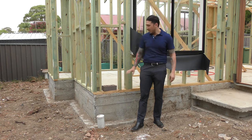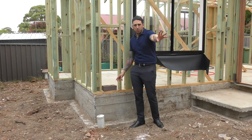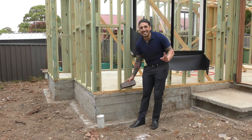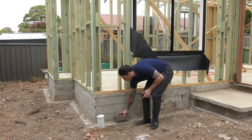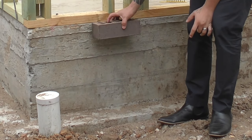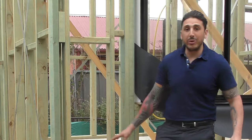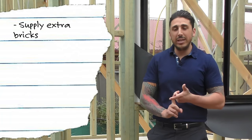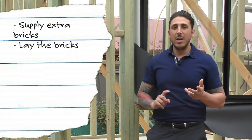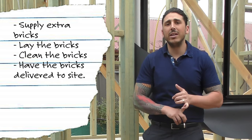Also, bricks. We'll have extra bricks. As you've seen before, there were only two bricks down. Now, here we potentially have five to six extra courses of bricks. So we have to supply extra bricks, get the bricks laid, clean the bricks, and also get the bricks delivered to site.